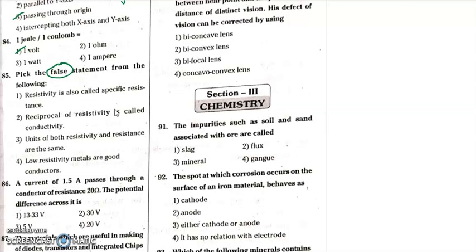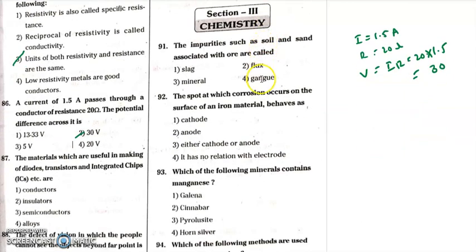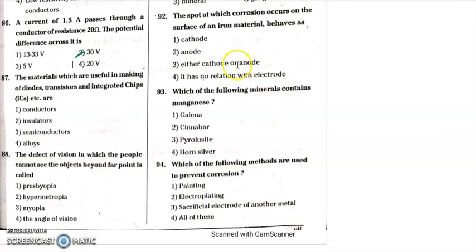Question 84: joule per coulomb is called a volt. So question 84, option 1 is the answer. Question 85: pick the false statement. Resistivity is also called specific resistance. The reciprocal of resistivity is conductivity. The units of resistivity are ohm-meter; the third option states ohms only, which is incorrect. So question 85's false statement is the third option.